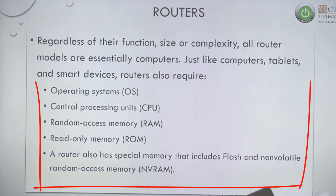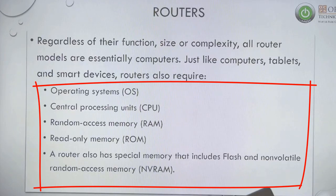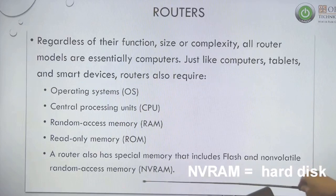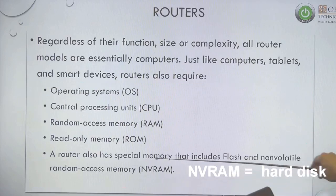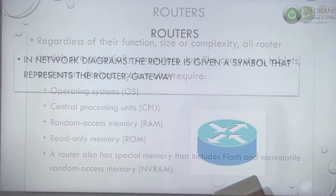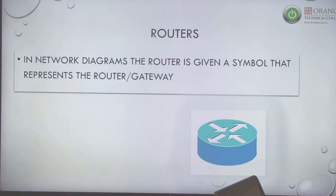Routers are going to have RAM and ROM. The unique feature they talk a lot about is NV RAM. Think of NV RAM as the router's hard drive — that's what they usually refer to, and whenever we say NV RAM, that is essentially the router's hard drive.